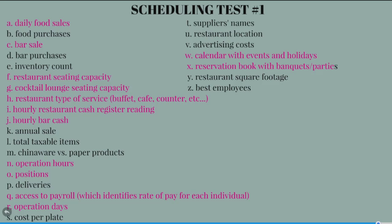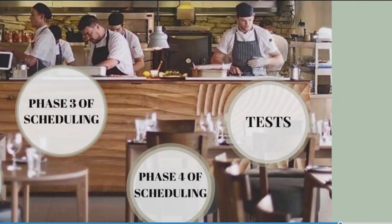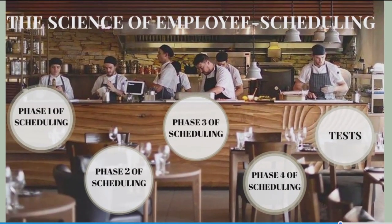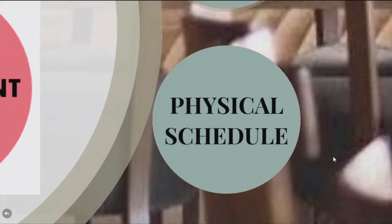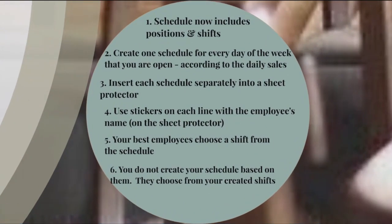Once you put your schedule on the wall for six or seven days with stickers, put them in sheet protectors. You can make them larger and hang them — Monday, Tuesday, Wednesday, Thursday. The stickers you can pick up at any stationery store, in any color. On a transparency sheet they work just fine — put one on, write someone's name on it, and you're set.